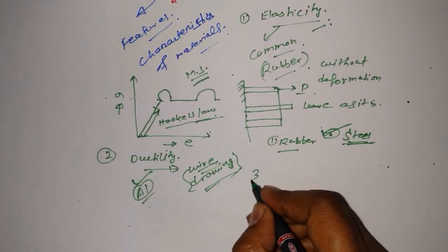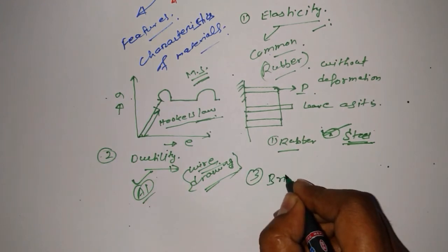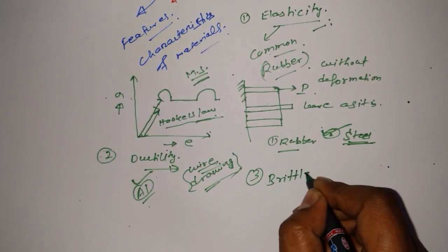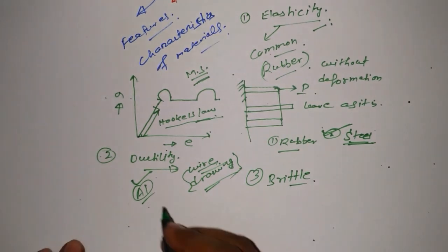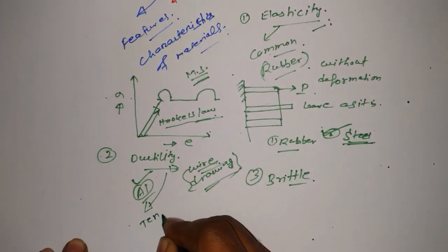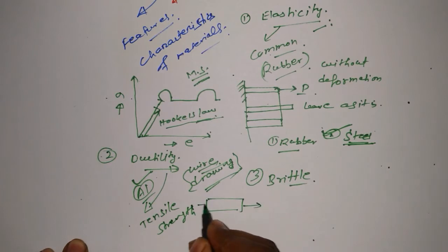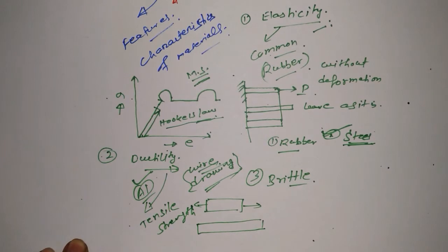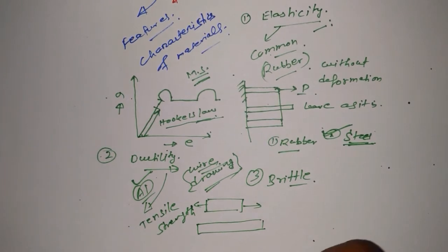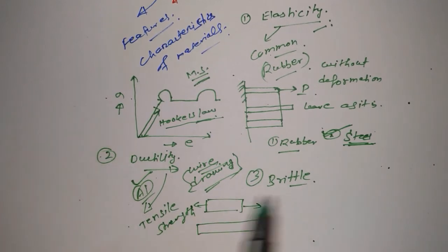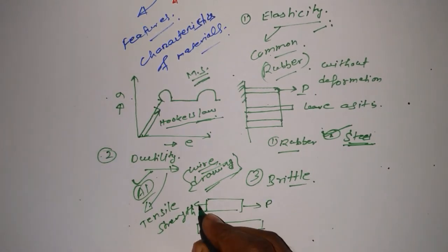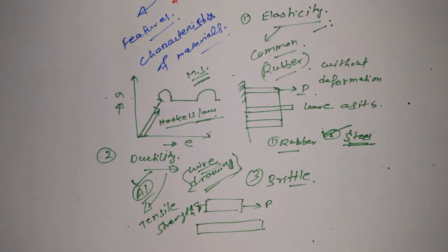Ductile materials have another feature — they have very good tensile strength. Tensile strength means if you have a body and you pull it from both sides, it will keep on increasing in length; it will not break easily. Of course it will break after a certain point, but it will expand considerably after pulling from both sides with a proper force.